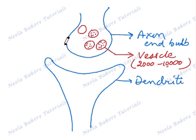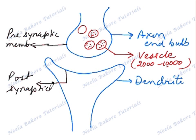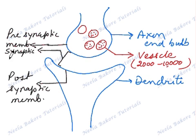The membrane of axon end bulb is known as presynaptic membrane. And the membrane of the dendrite is known as the postsynaptic membrane. The gap between axon of one neuron and the dendrite of the other, this gap is called synaptic cleft. It can also be termed as synaptic gap.